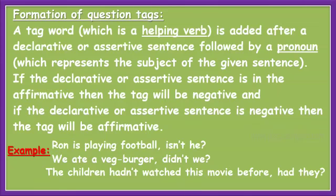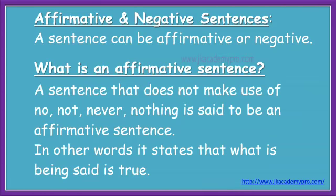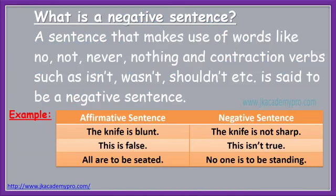Sentences can also be affirmative or negative. An affirmative sentence does not make use of 'no,' 'not,' 'never,' or 'nothing' — it states that what is being said is true. A negative sentence makes use of words like 'no,' 'not,' 'never,' 'nothing,' and contraction verbs such as 'isn't,' 'wasn't,' 'shouldn't,' etc. Examples: 'The knife is blunt' (affirmative) vs. 'The knife is not sharp' (negative). 'This is false' vs. 'This isn't true.' 'All are to be seated' vs. 'No one is to be standing.' Both sets of sentences say nearly the same thing but from a different perspective.